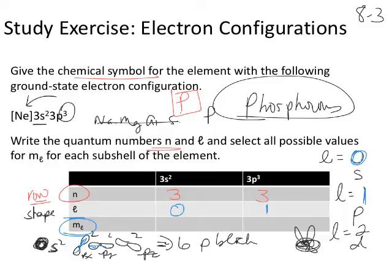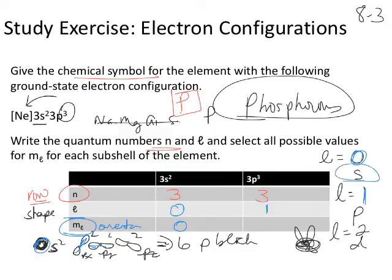M_sub_L is your orientation. Because S is a sphere, it has no orientation — m_sub_L = 0. For P, the orientations are px, py, pz, giving m_sub_L values of -1, 0, and +1. There are three values because there are three orientations. These numbers come out of complex quantum mechanical equations — chemists have assigned shapes to them so we can use them practically.